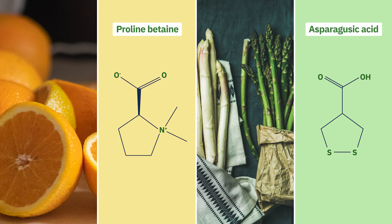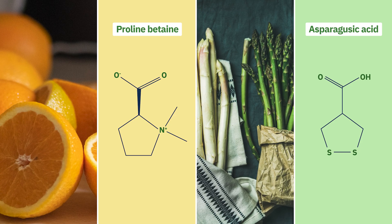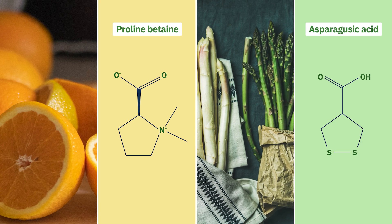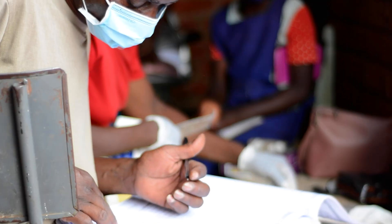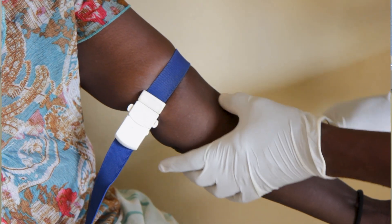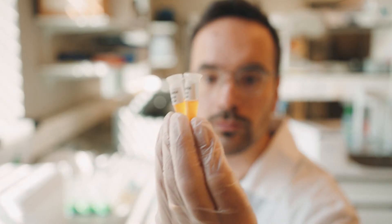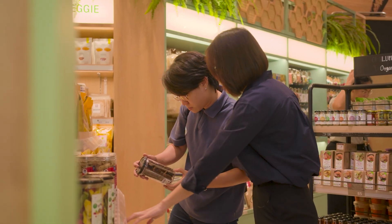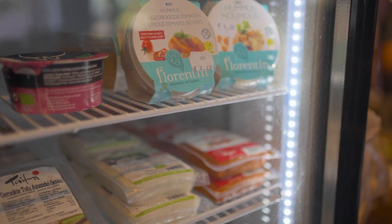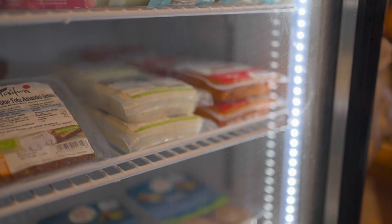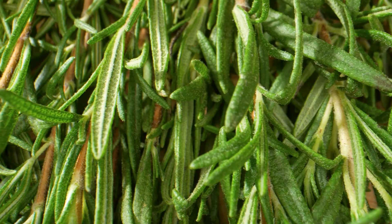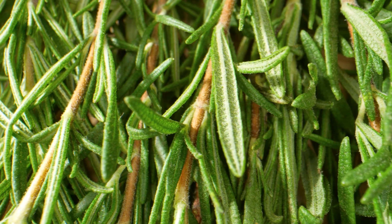Other specialised metabolites, when found in your blood or urine — such as proline betaine or asparagusic acid — can be used as chemical biomarkers to tell whether you ate oranges or asparagus for lunch. In other words, specialised metabolites can also be used to study human nutrition and dietary preferences. When we think of sustainability in food systems, specialised metabolites can also help reduce food waste by extending the shelf life of foods by acting as natural preservatives. For example, the phenolic flavonoids in many herbs have antimicrobial properties that inhibit the growth of spoilage microbes.